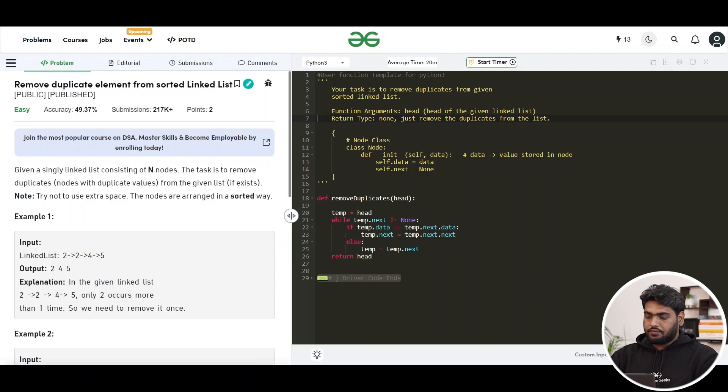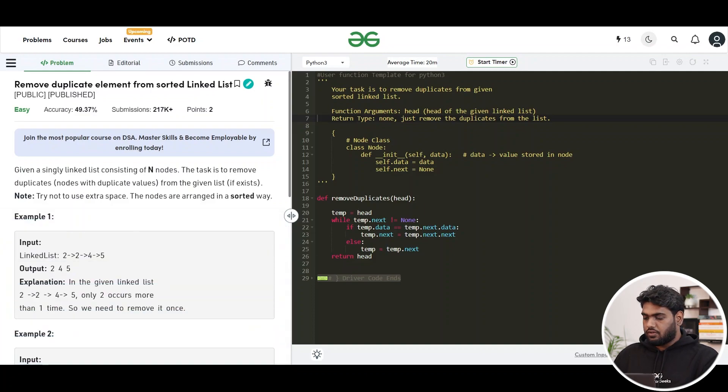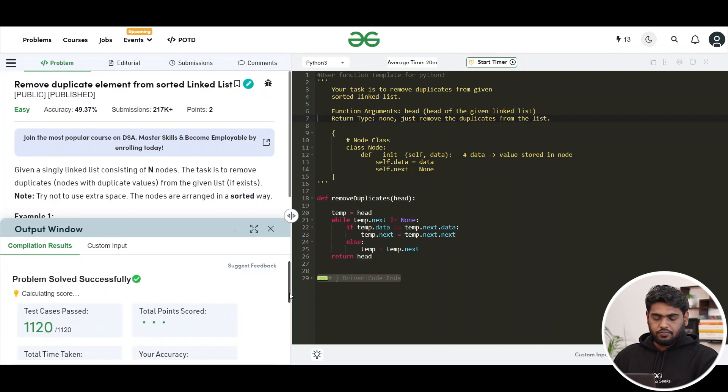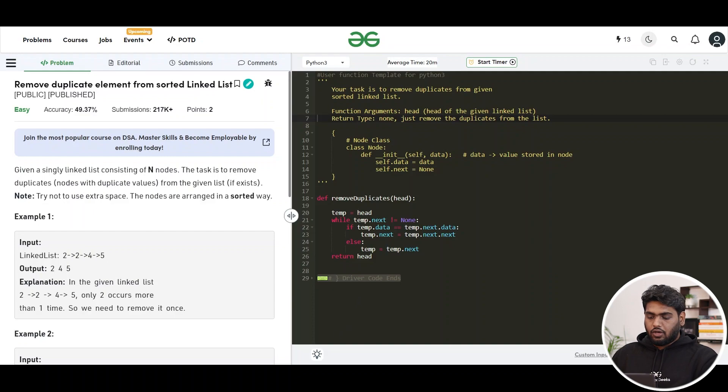So let's see how this code is working. Let's compile and run the code. All right, it is passing the sample case. Let's submit the solution. All right, so it is passing all the test cases. Let's quickly discuss the complexity it might have.